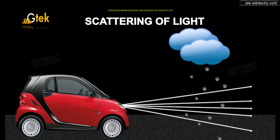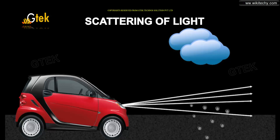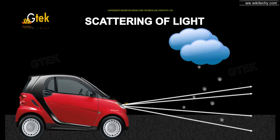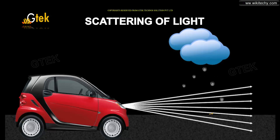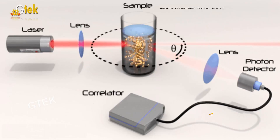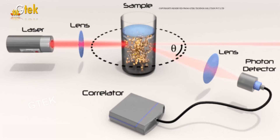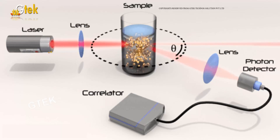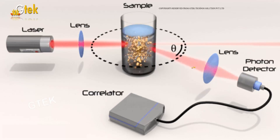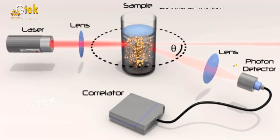Let's move on to the scattering of light — how the lights are scattered. Considering a vehicle, the lights from the vehicle and the raindrops are coming in — how are the lights scattered? This is proven and checked out using a small experiment using a photon detector with a lens and laser. You can see here the laser light is passing in and there is a refraction happening by an angle theta, detected by the photon detector.